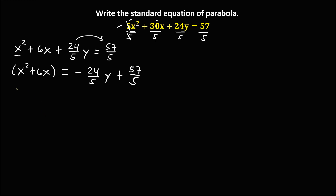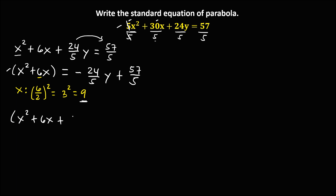Then we can now do completing the square for x. In completing the square, take this number and divide by 2, then raise to the power of 2. So 6 divided by 2 is 3, and 3 squared is 9. We need to add this number to both sides. So we have x squared plus 6x, then plus 9, then equals.